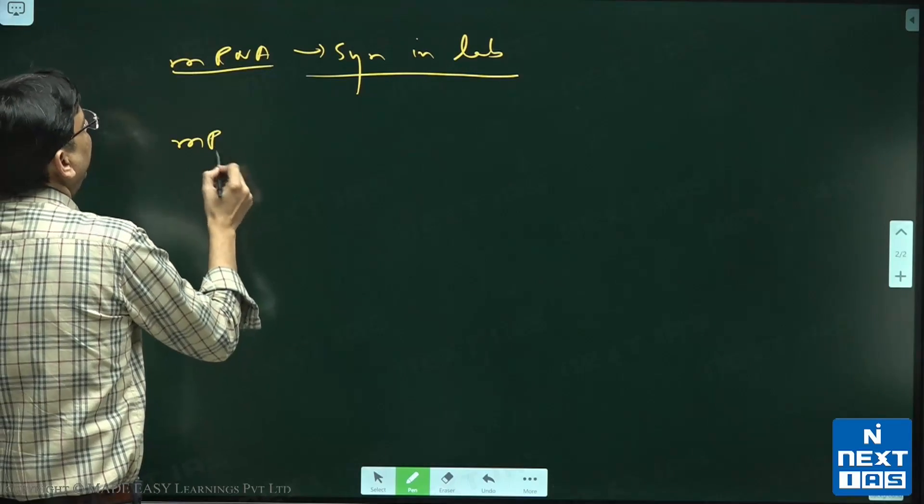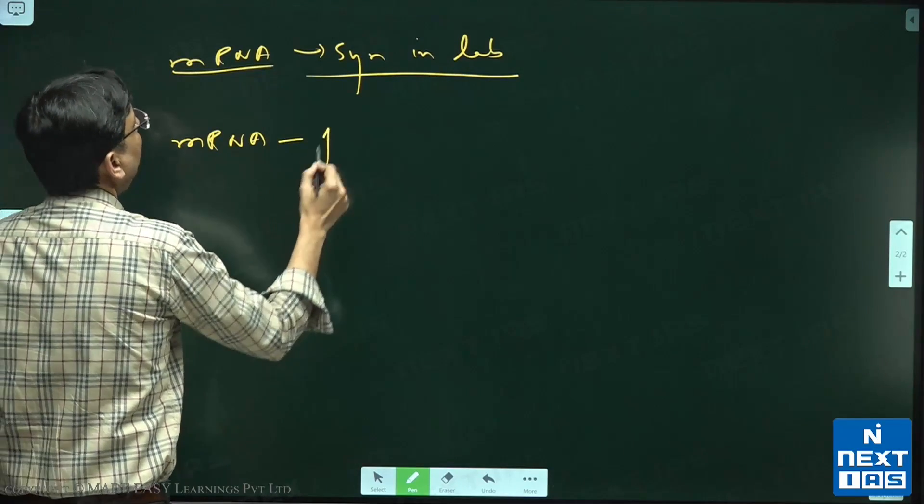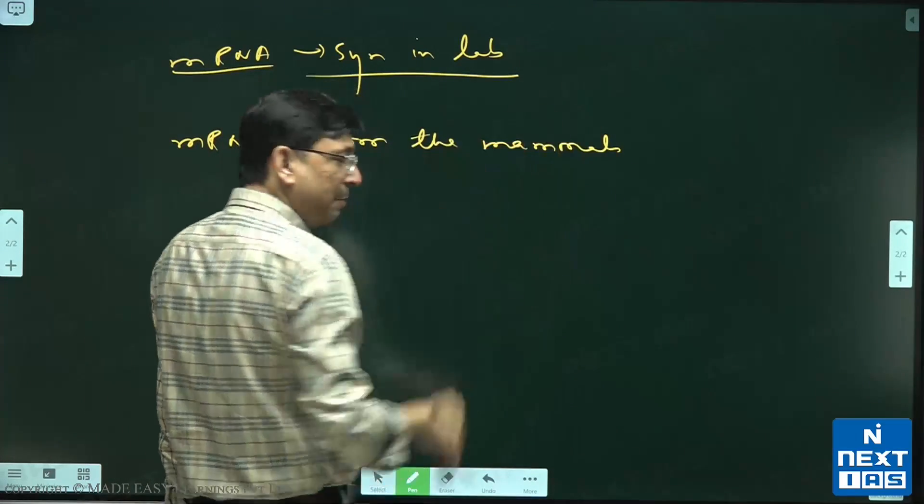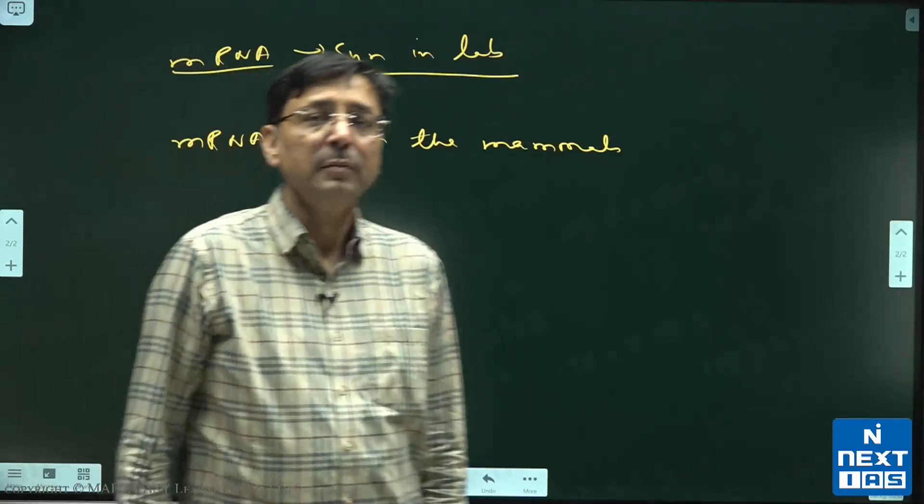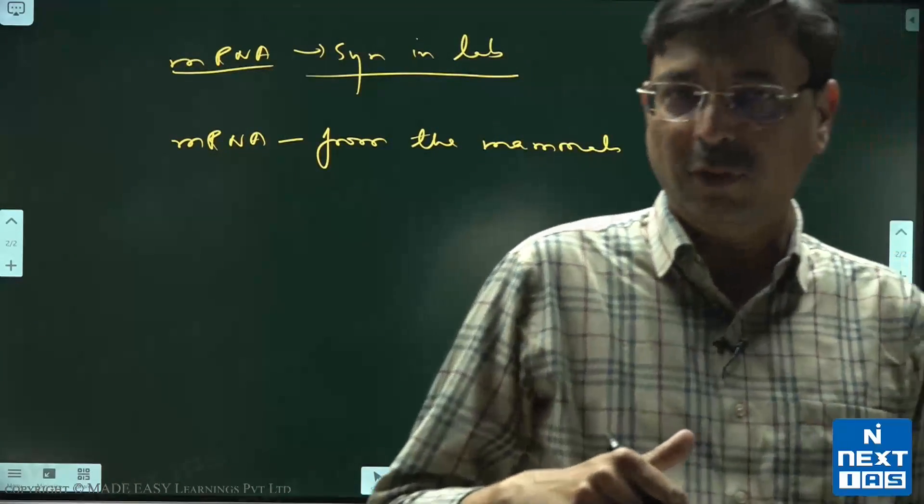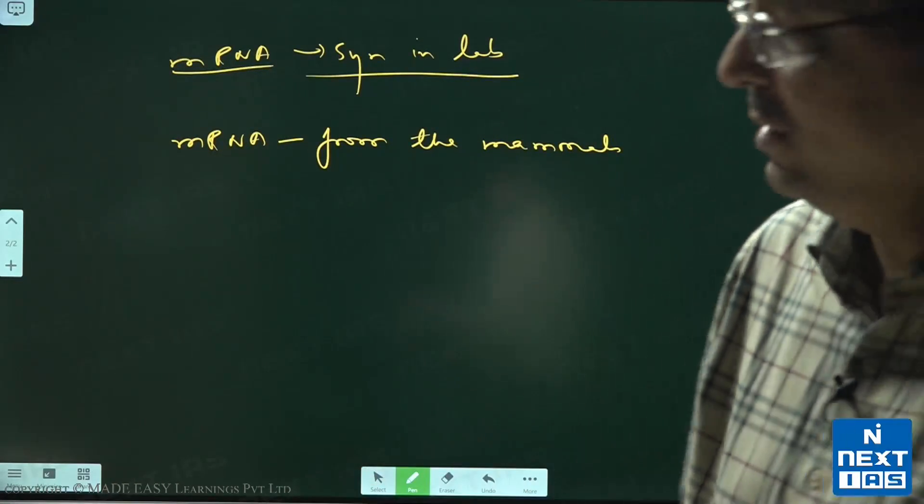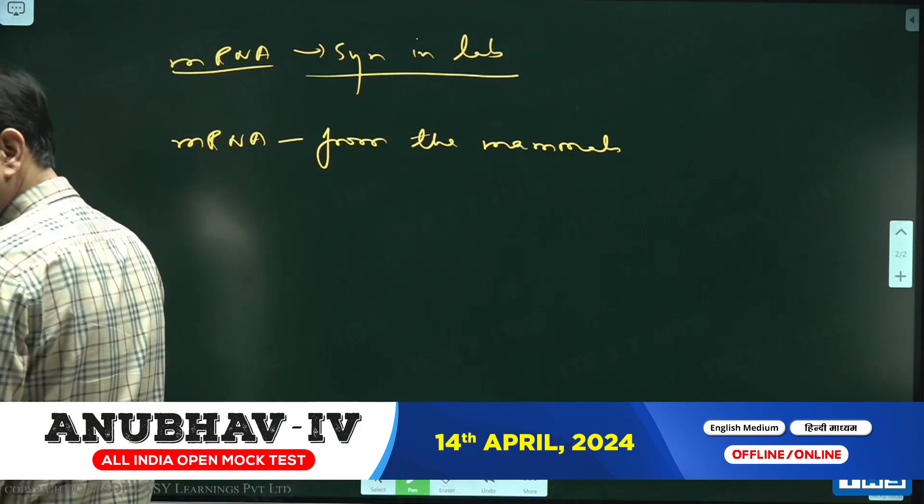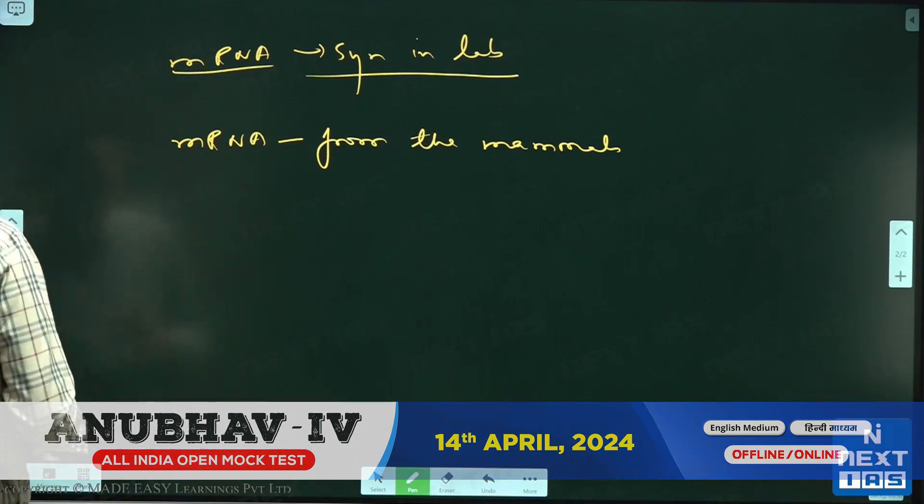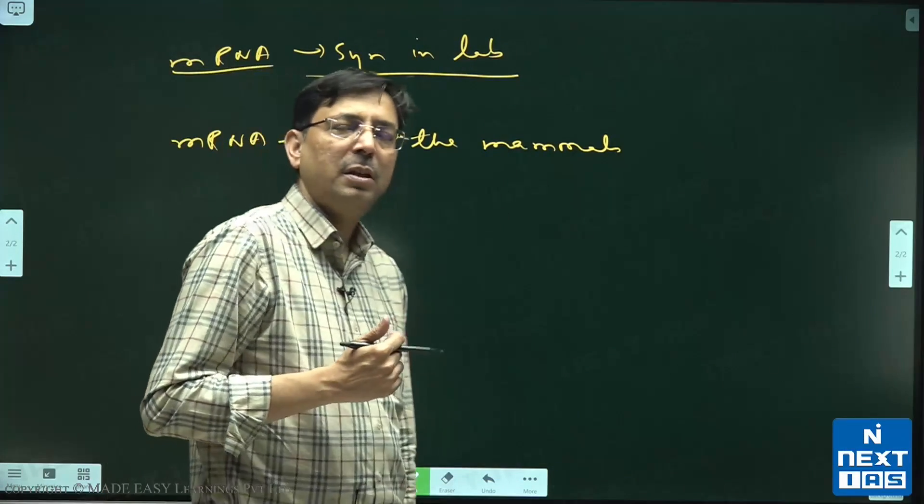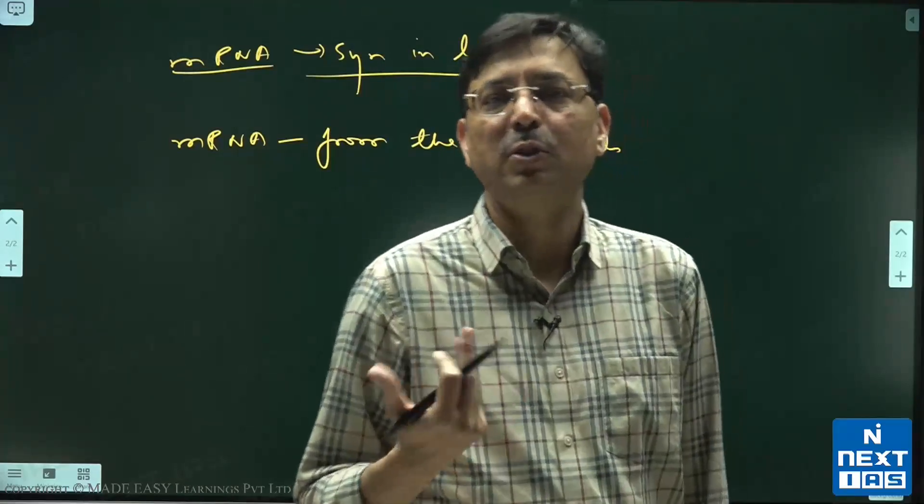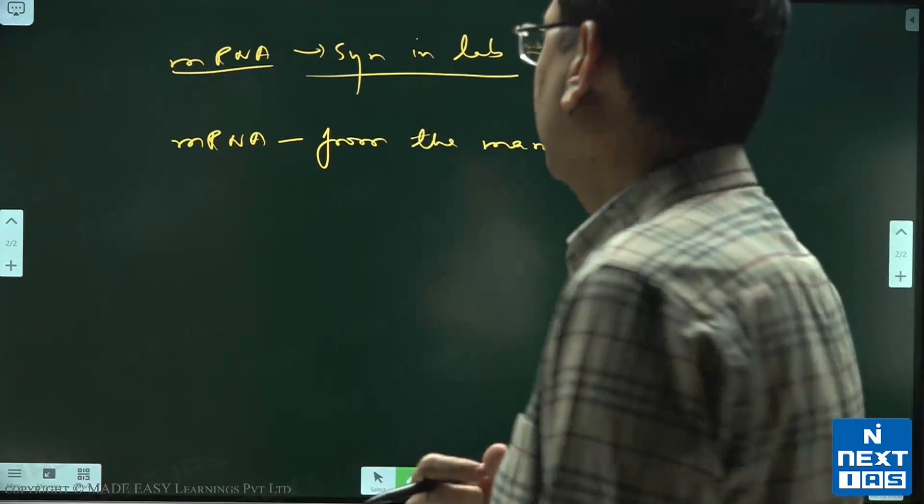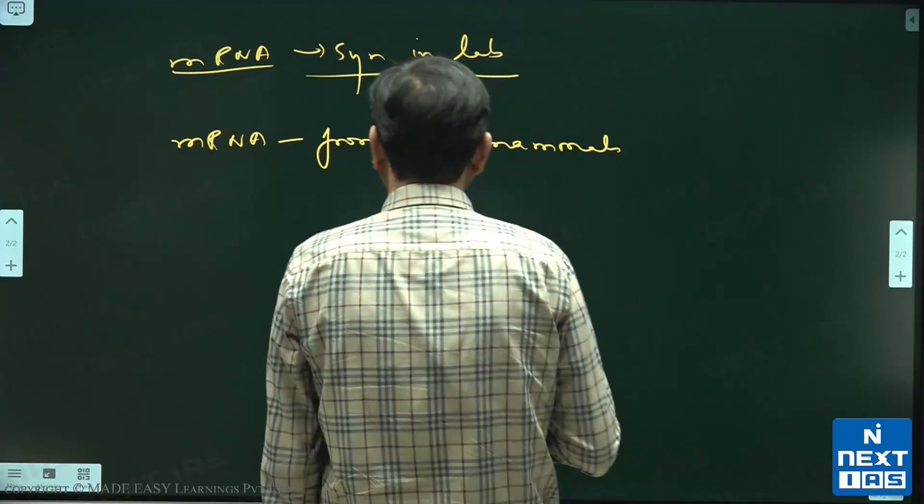They took the mRNA from the mammals. But when the mRNA from the mammals was injected in some other organism, this time there was no adverse reaction. So they were like, what is going on here?